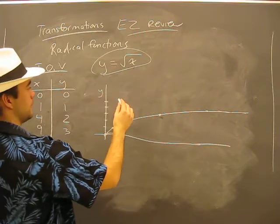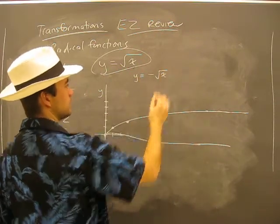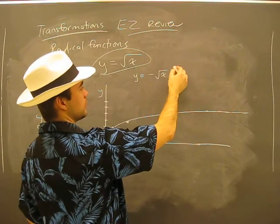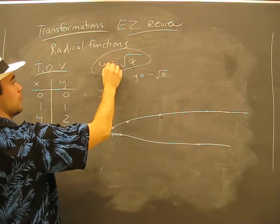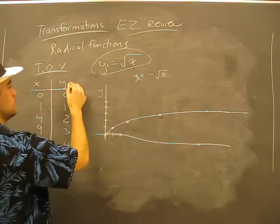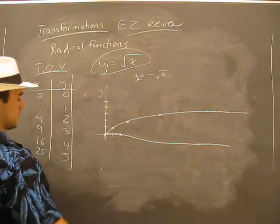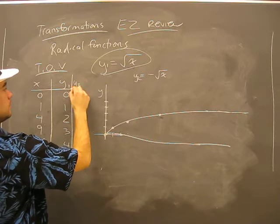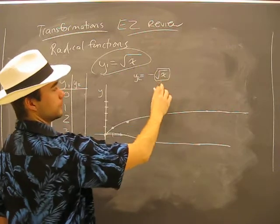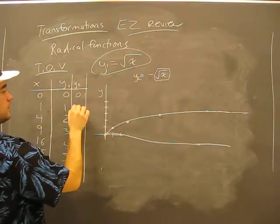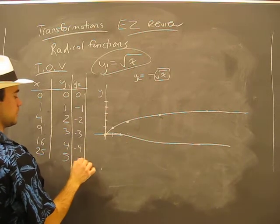There are some variations that I wanted to describe here. Suppose we had y equals negative root x. Well that means for whatever numbers we put into x, let's call this y1 and let's call it y2. So here's our y1 values, and our y2 values.